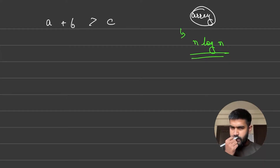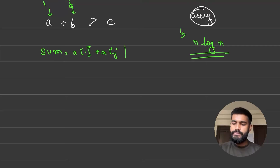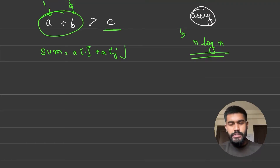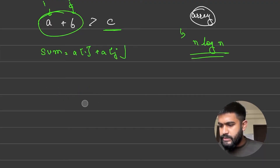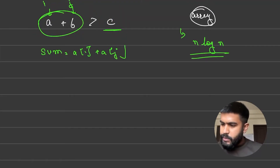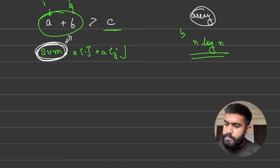With a sorted array, we can select values a and b using i and j pointers and compute their sum a[i] plus a[j]. This sum forms a valid triangle for all values of c that are smaller than the sum. We can find the location of this sum in the sorted array, and all locations before that index would be valid values for c.